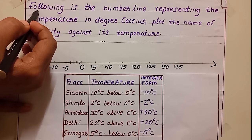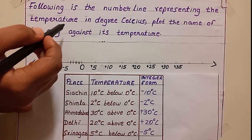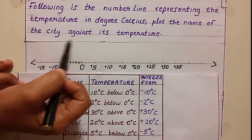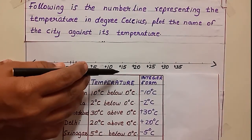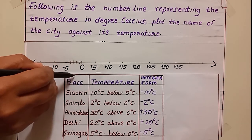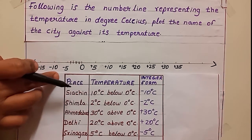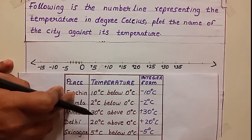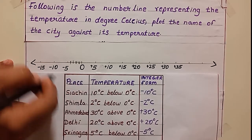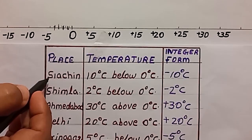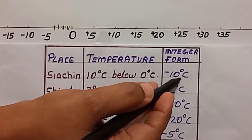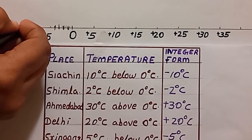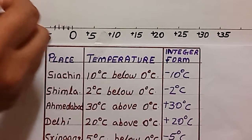Following is the number line representing the temperature in degree Celsius. Plot the name of the city against its temperature. See here, they have given a number line and some points are marked on it. We have made a chart in the previous problem and we have to select the places on this number line. Siachin is minus 10 degree Celsius, so here I can write Siachin.